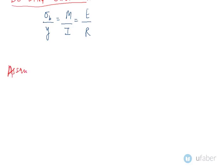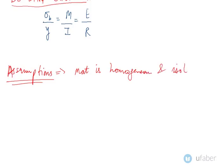To derive the theory of simple bending, some assumptions are that the material is homogeneous and isotropic. Homogeneous means constant configuration or composition throughout, and isotropic means no directional dependence of material properties. Young's modulus E in compression is equal to Young's modulus in tension.